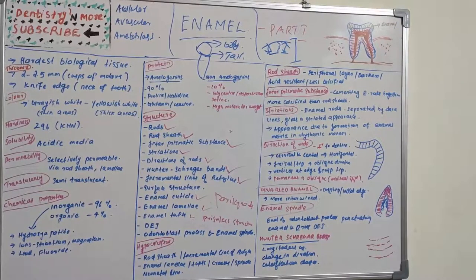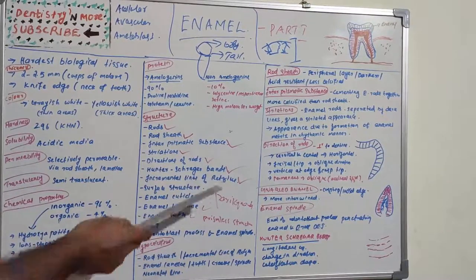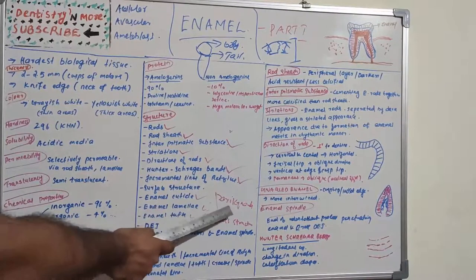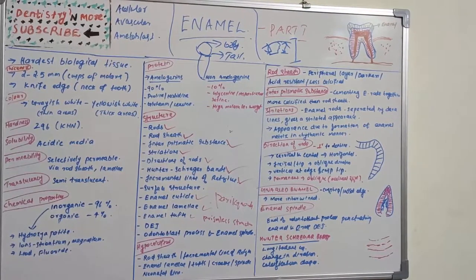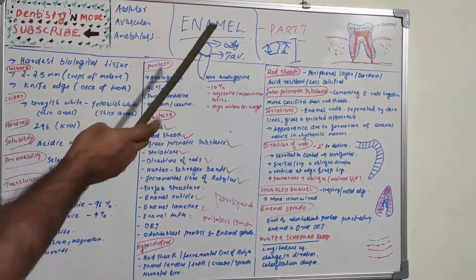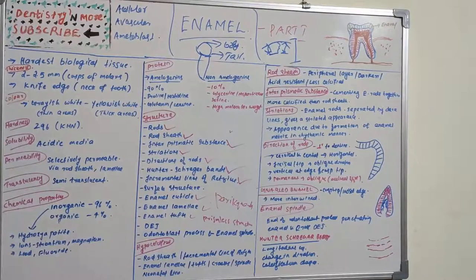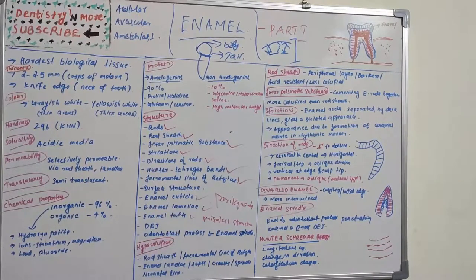Perikymata are transverse wave-like grooves believed to be the external manifestation of the striae of Retzius. There are about 30 perikymata per millimeter in the region of the cemento-enamel junction, and their concentration gradually decreases near the occlusal or incisal surface, where there are about 10 per millimeter. Perikymata are the external manifestation of the incremental lines of Retzius.